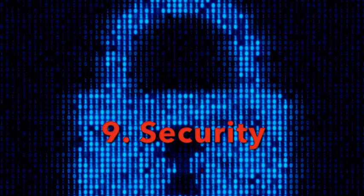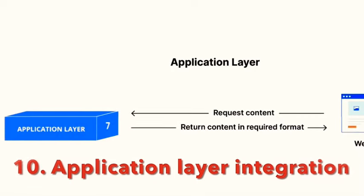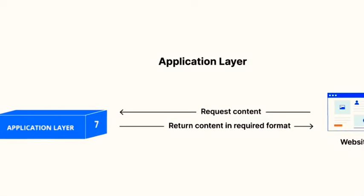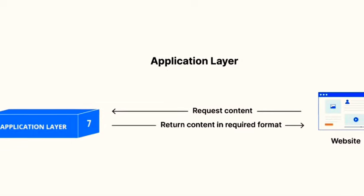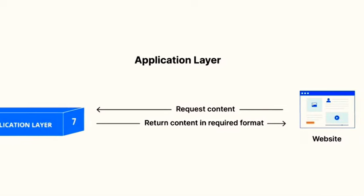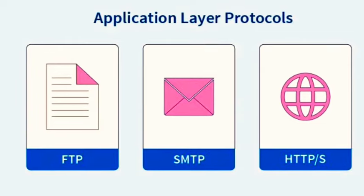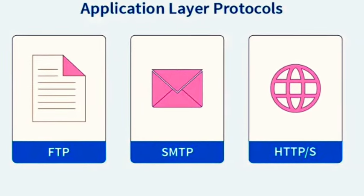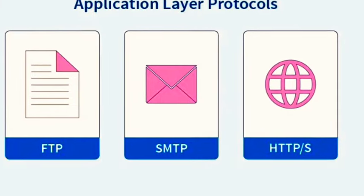Number nine: security. Some protocols incorporate security features such as encryption and authentication to protect data from unauthorized access or tampering. Number ten: application layer integration. Protocols operate at different layers of the OSI model. The application layer protocols are specific to the type of application — for example, HTTP for web browsing. These protocols rely on lower level protocols to ensure end-to-end communication.